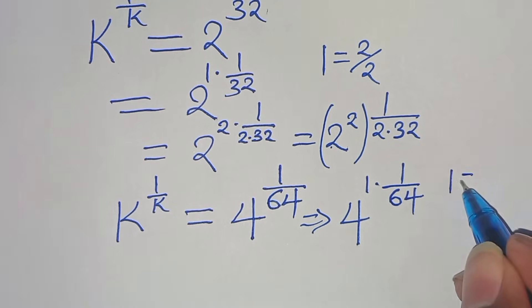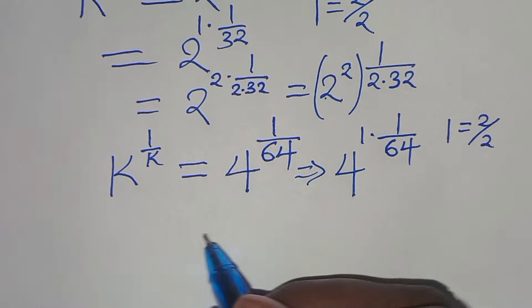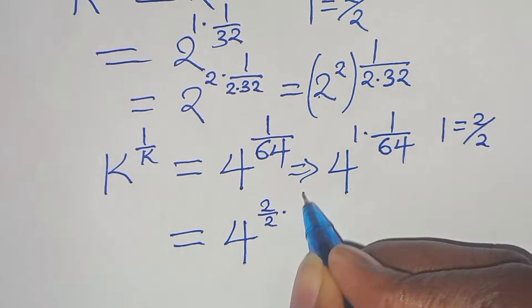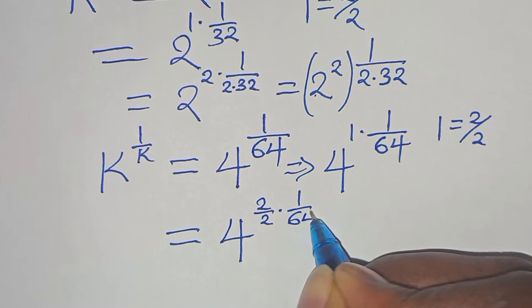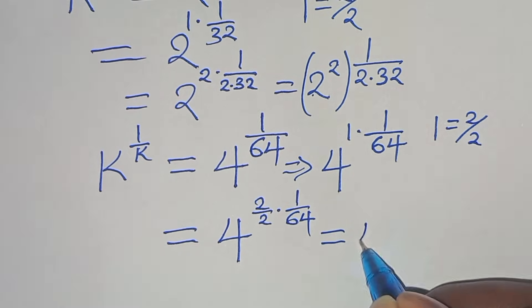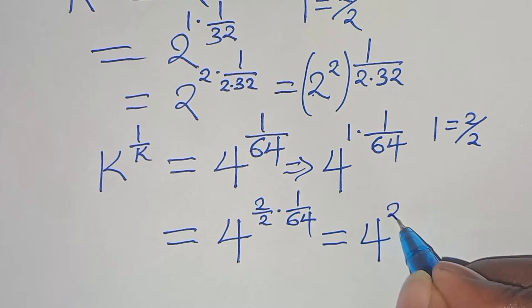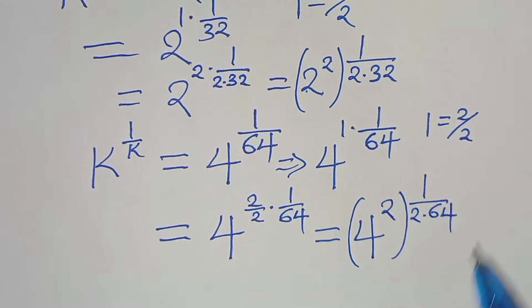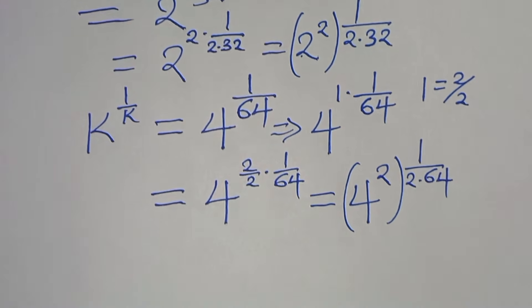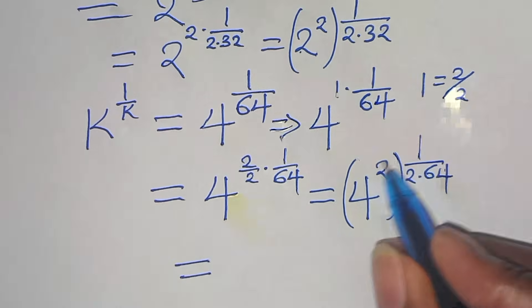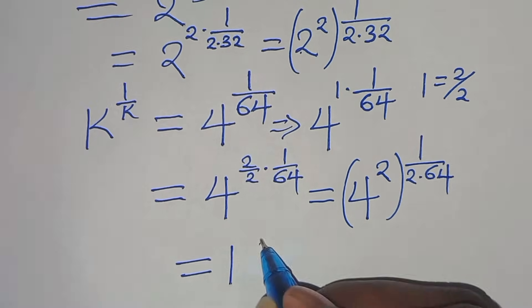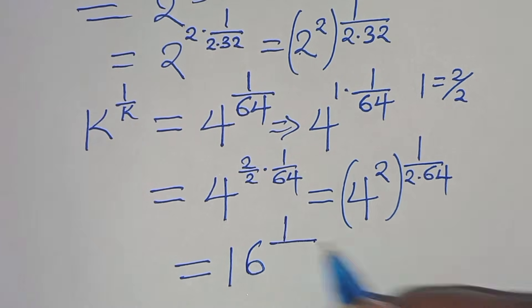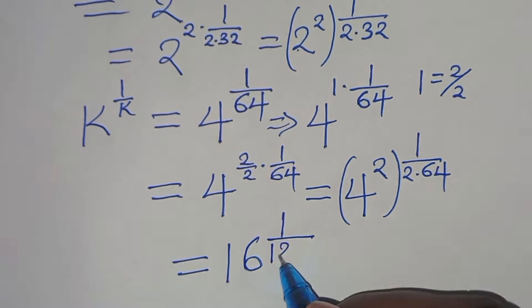Again, we express 1 as 2 over 2, so we have 4 to the power of 2 over 2 times 1 over 64. This gives us 4 to the power of 2, raised to the power of 1 over 2 times 64. Now 4 squared is 16, and 2 times 64 is 128, so we have 16 raised to the power of 1 over 128.